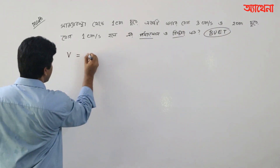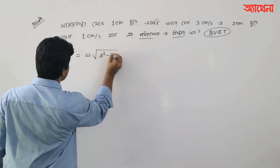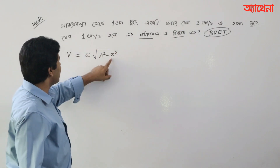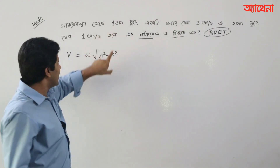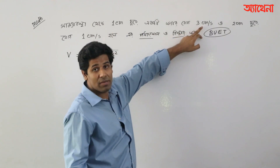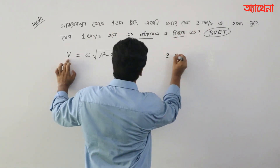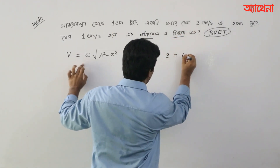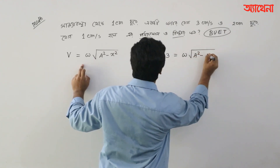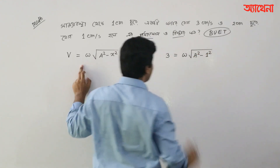So, let's see that v equals omega times root of (a squared minus x squared). Now, let's check that x is 1 centimeter. If x is 1 centimeter, the velocity is 3 centimeters per second. The equation is: 3 squared equals omega squared times (a squared minus 1 squared). This is equation number 1.